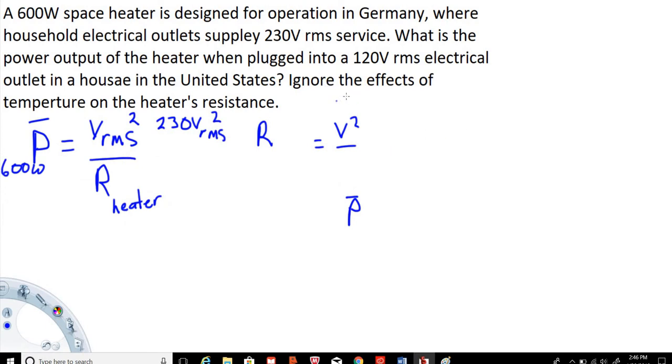So let's pull this in. So we have the 230 volt RMS squared divided by, we already have the power of the 600 watts when it's running in Germany. So we're going to take the voltage squared, so 230 squared divided by 600 watts. So what we're going to get there is the R resistance of the heater is going to be equal to 88.16 ohms.